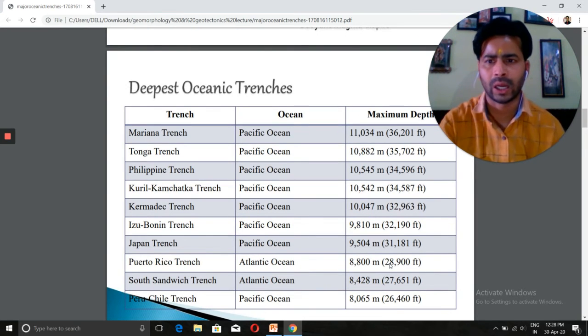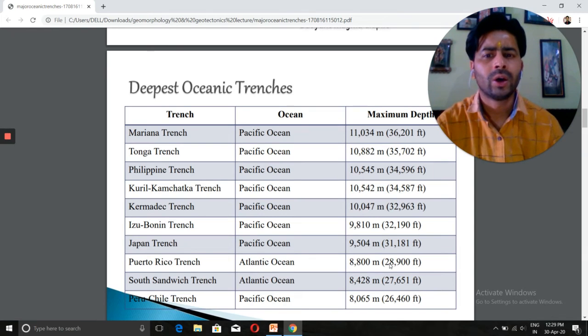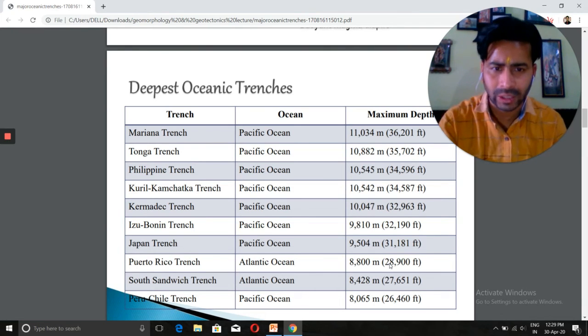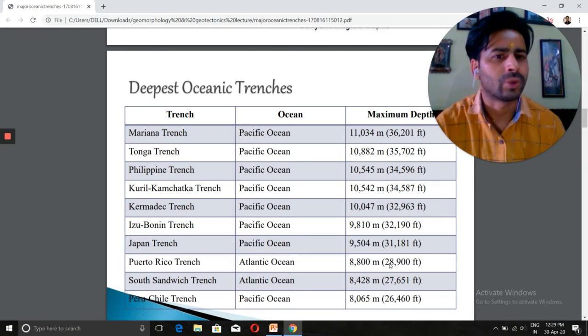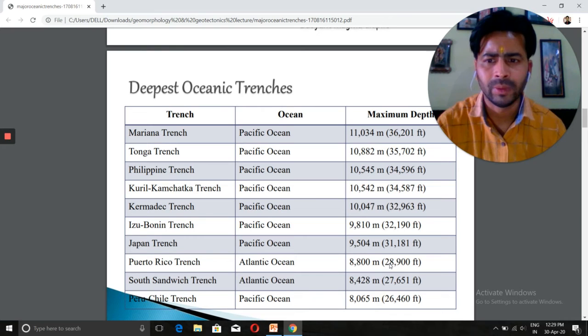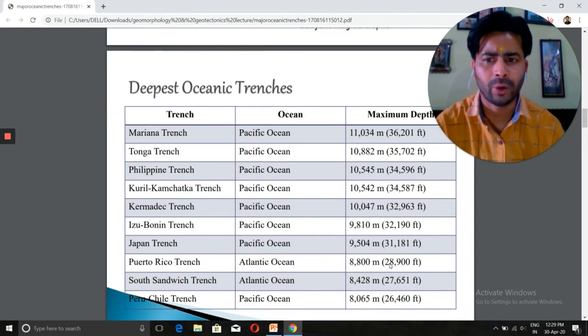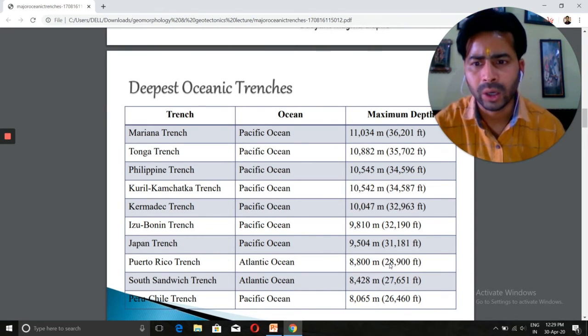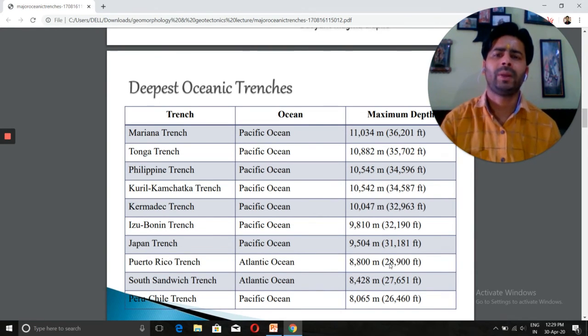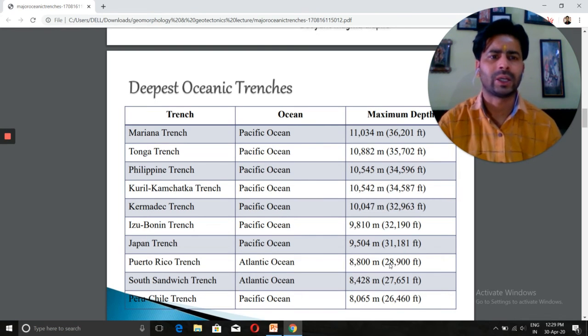The deepest oceanic trenches are: first, Mariana Trench in the Pacific Ocean with a maximum depth of 11,034 meters; Tonga Trench in the Pacific Ocean with more than 10,000 meters maximum depth. These are some of the deepest trenches: Mariana, Tonga, Philippines, Kuril, Kermadec, Izu, Bonin Trench, and Japan Trench.